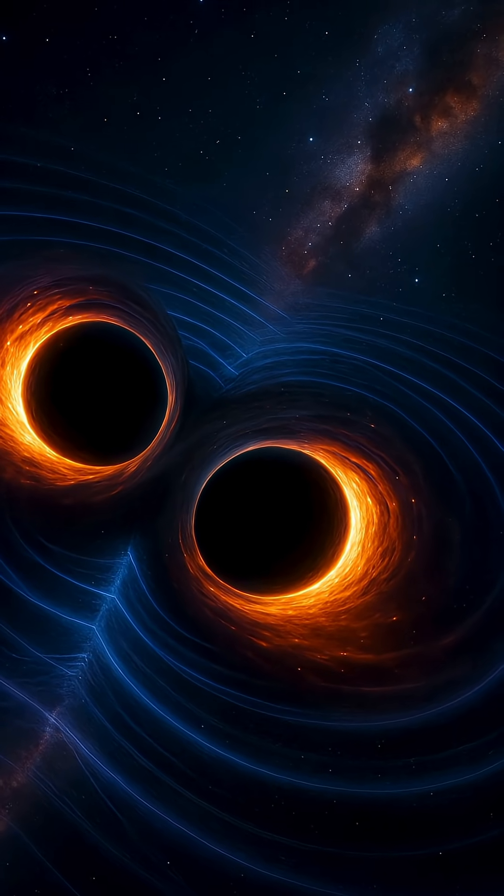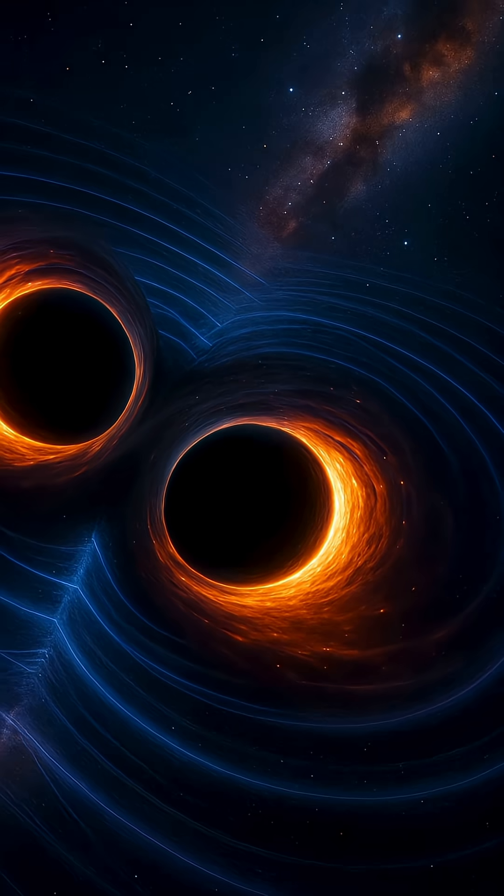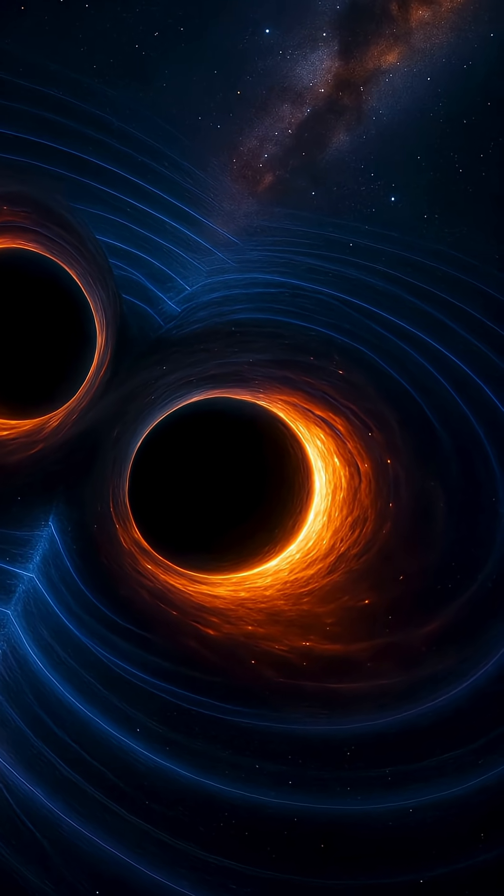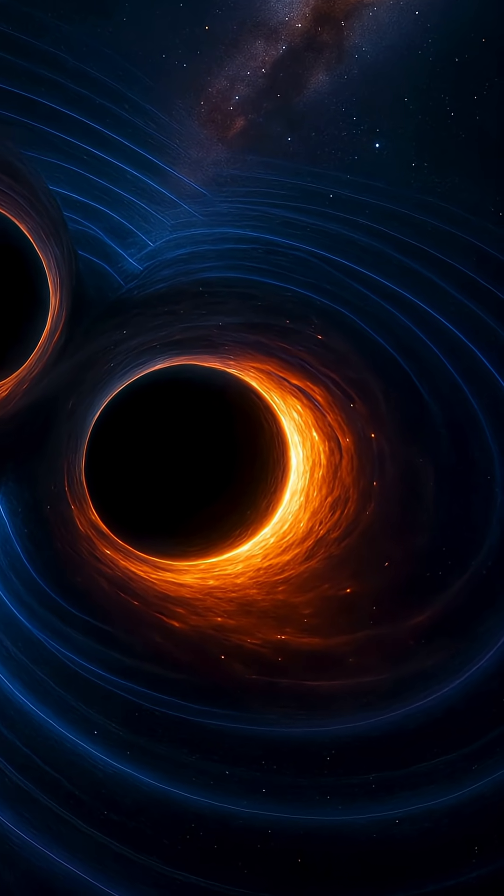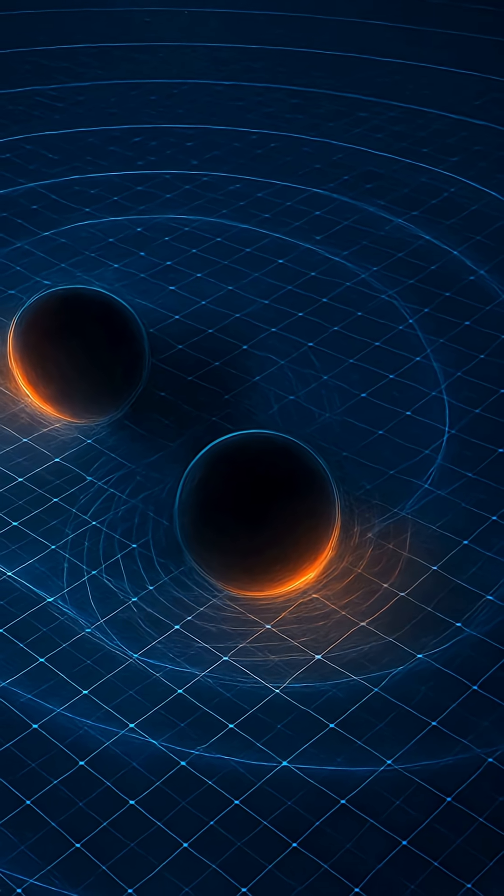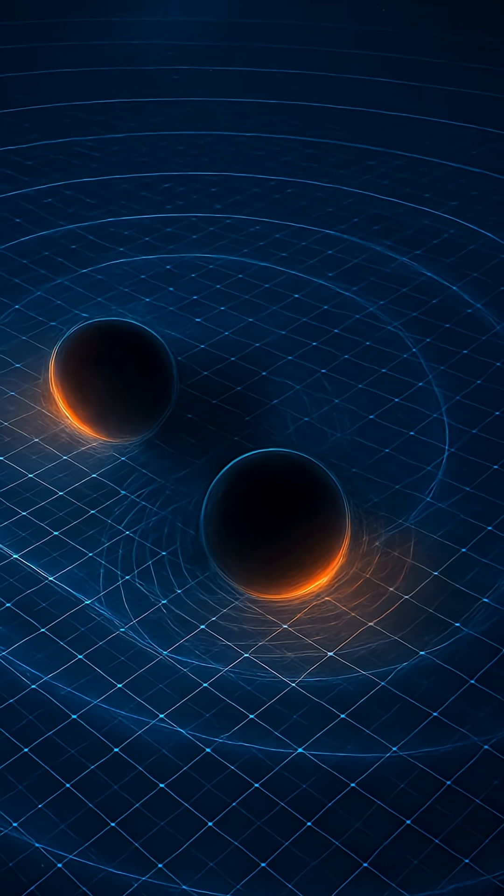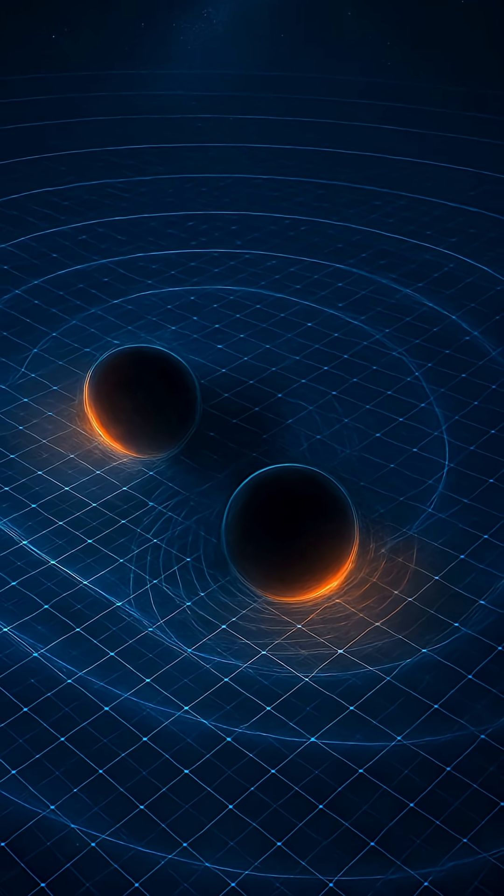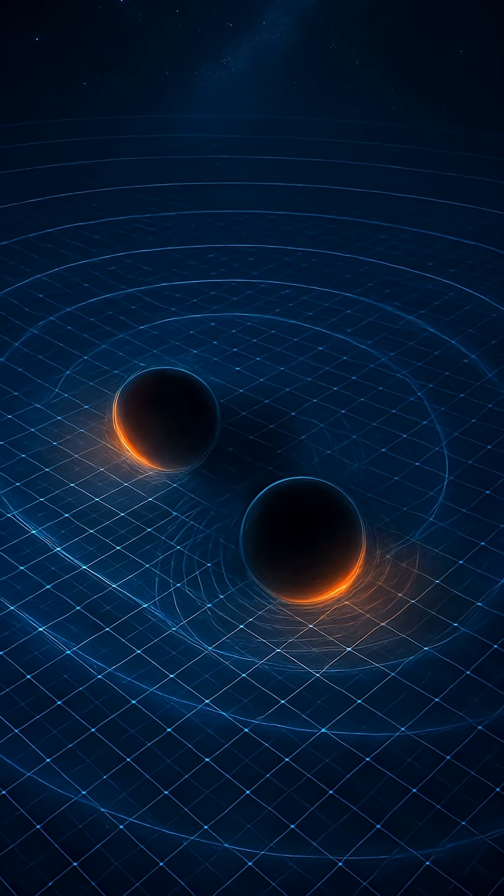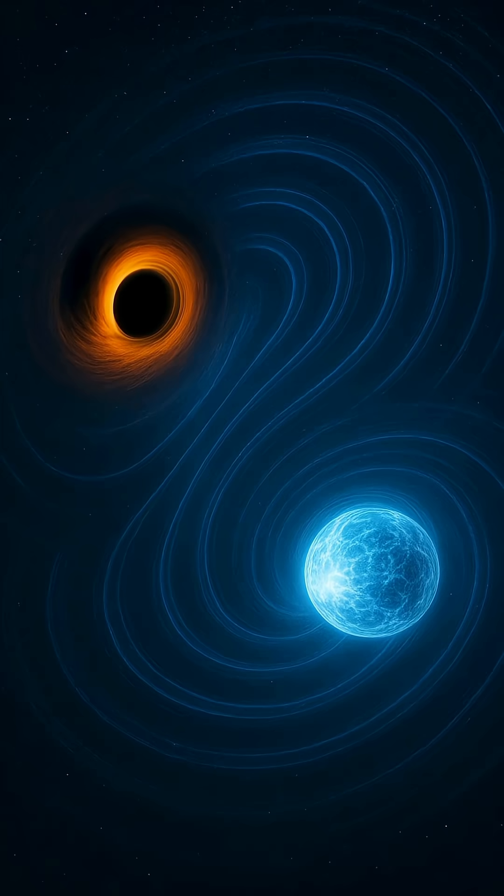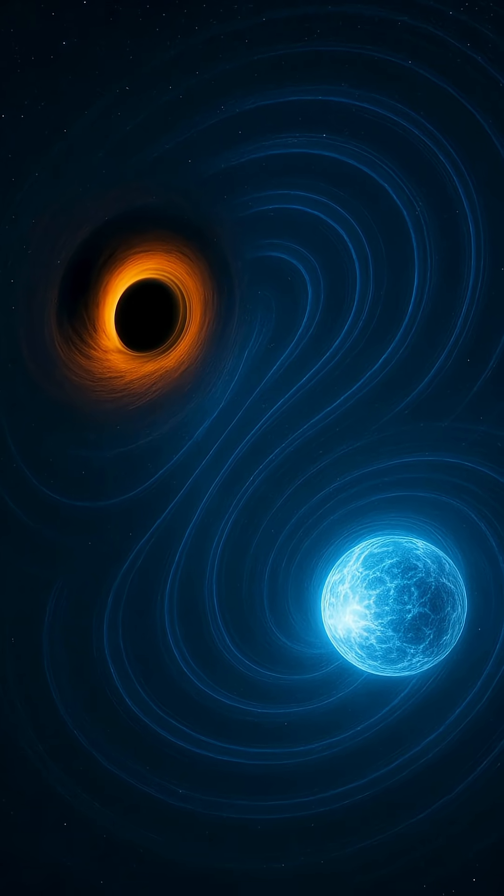In the quiet stillness of the universe, where light can take billions of years to travel and sound cannot echo, something extraordinary was detected in 2015, an invisible ripple in the very fabric of space and time. This cosmic tremor, known as a gravitational wave, wasn't light nor particles. It was something different, something predicted a century earlier by Albert Einstein.